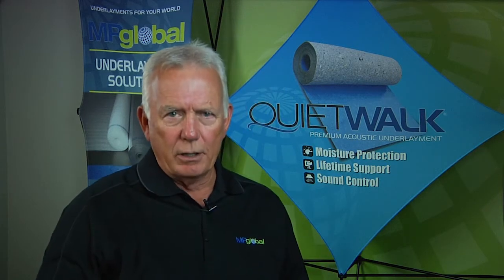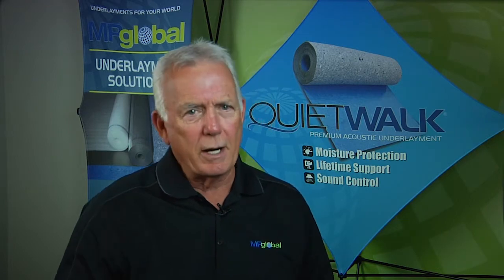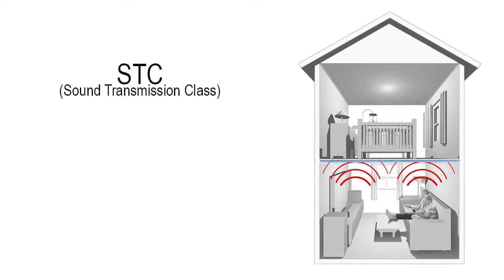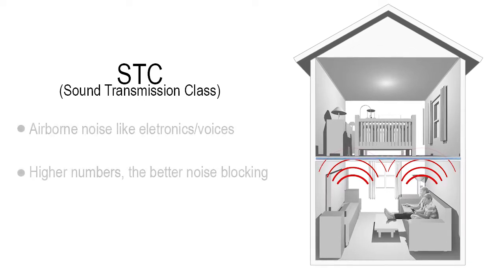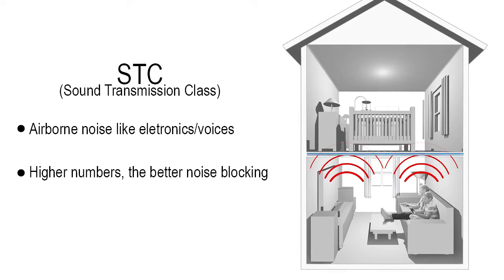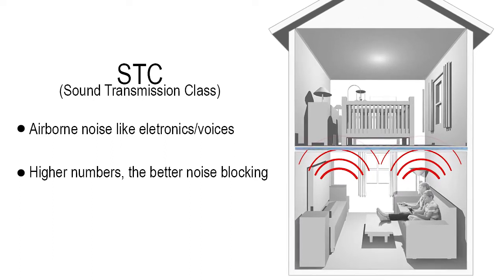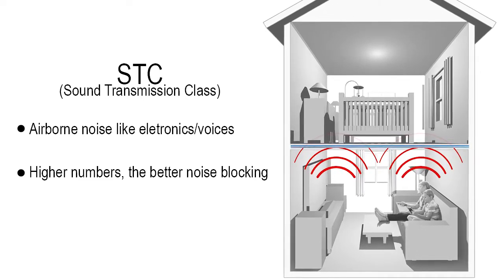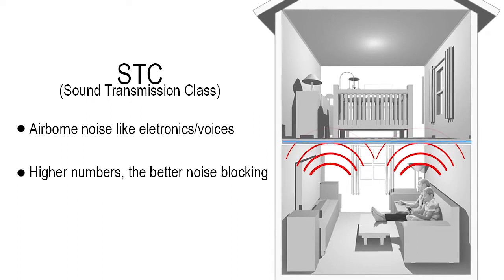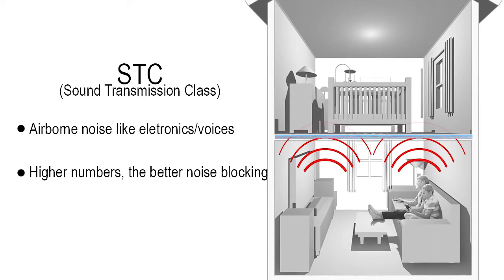There are common industry acronyms published on product packaging, so let's review those now. STC — Sound Transmission Class — is a lab testing score used to determine airborne sound transmission loss for typical noises such as televisions, stereos, and voices. The higher the STC rating, the greater the effectiveness of a material or floor-to-ceiling assembly construction to reduce the transmission of airborne sound.